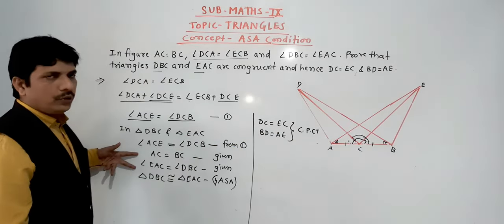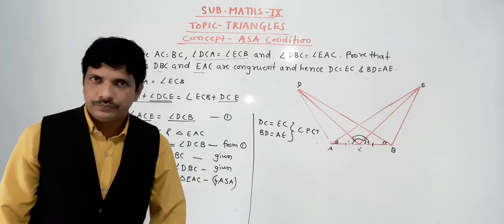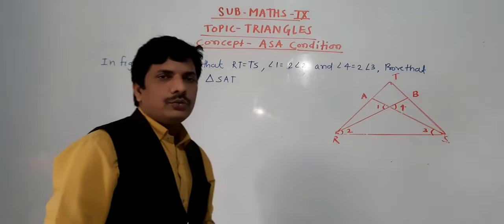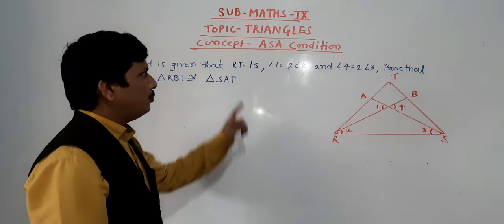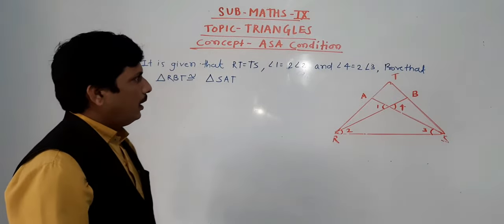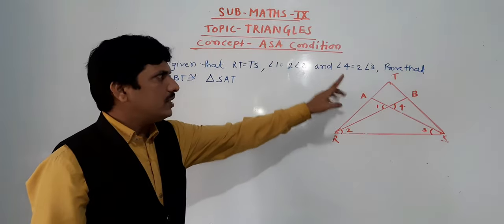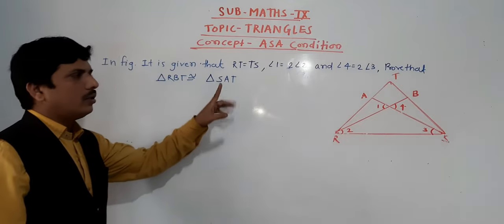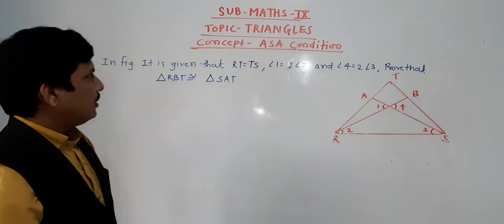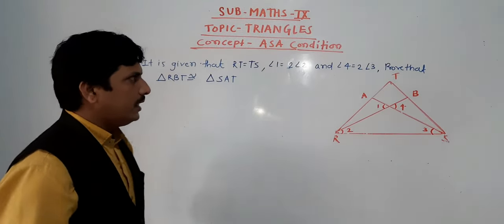Our second problem is: in the figure, RT is equal to TS. Angle 1 is equal to 2 times angle 2, and angle 4 is equal to 2 times angle 3. We need to prove that triangle RBT is congruent to triangle SAT.